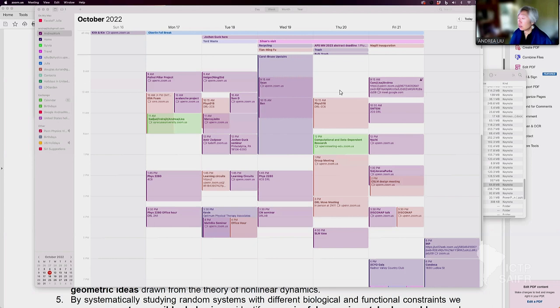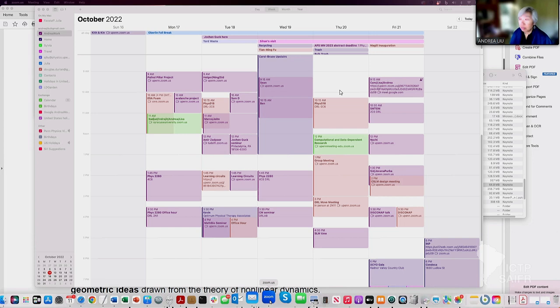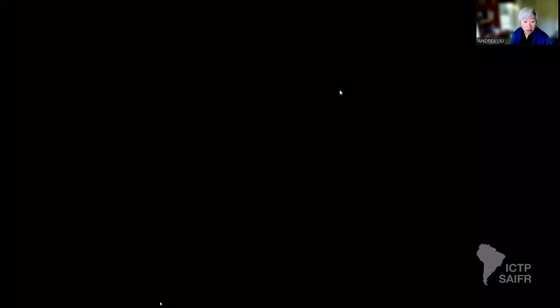So now let me go back to the zoom. Now you see the right thing. We see again the onset temperature, only one slide — is that right? Perfect. Now you see my mouse.